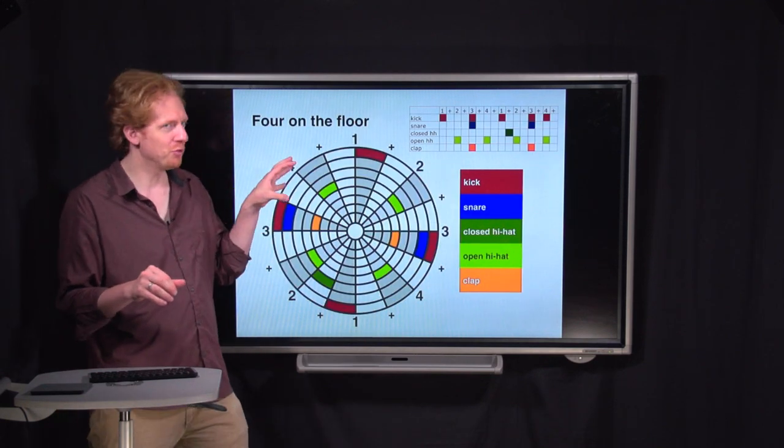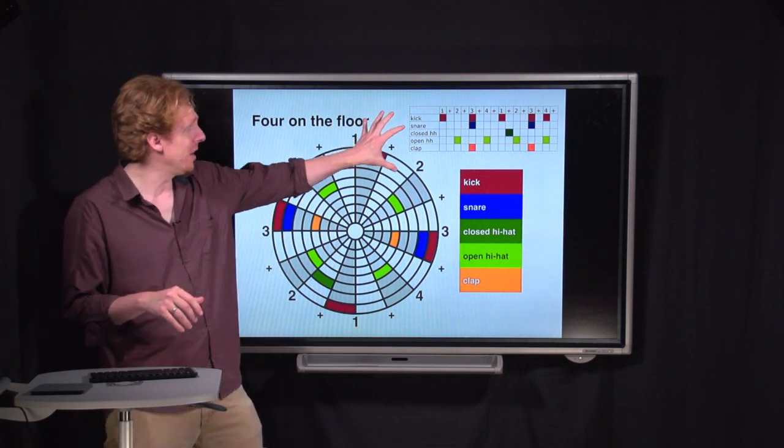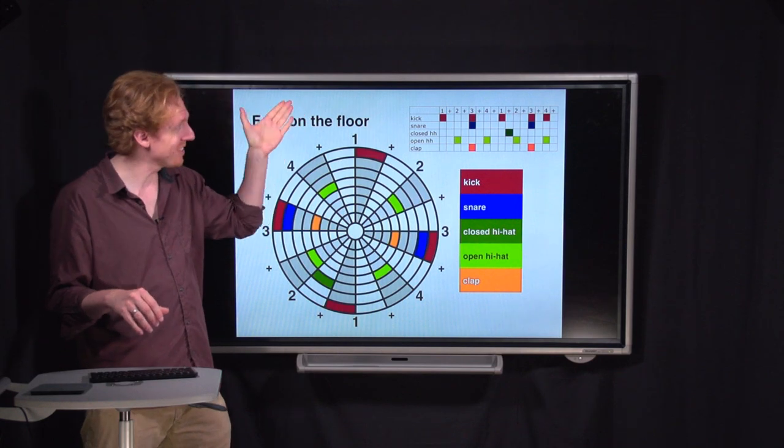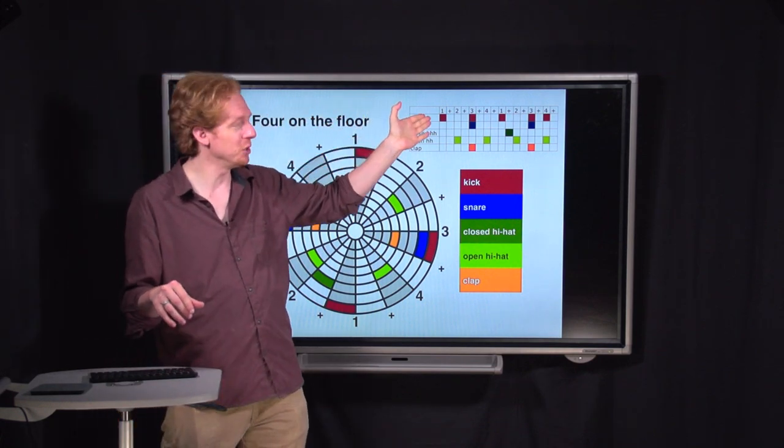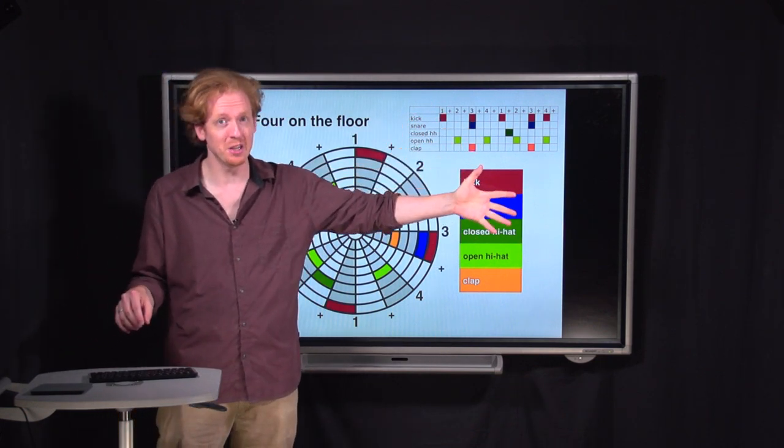Before we get started on the actual music, just a word about what it is that you're seeing on the screen. Over here, you've got a standard time unit box system representation of each beat. This is the way that it would look if you were to program it into an actual drum machine, or software emulating a drum machine.